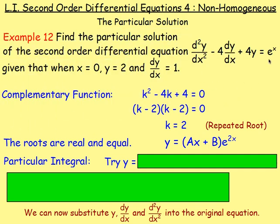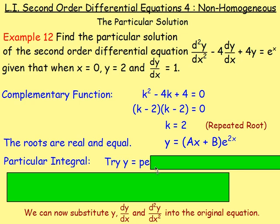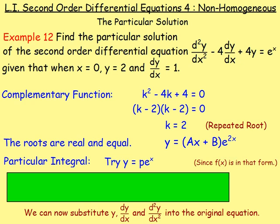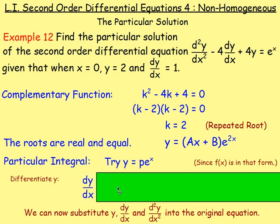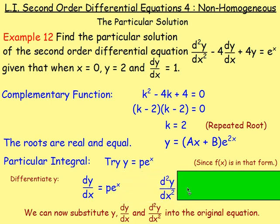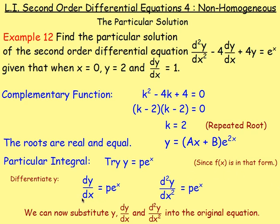Now we need the particular integral, because this equation does not equal zero — it equals e^x. Since f(x) is of that form, let y = pe^x. We differentiate: dy/dx = pe^x, and differentiating again, d²y/dx² = pe^x. So we know d²y/dx², dy/dx, and y, and we can substitute them into the equation.